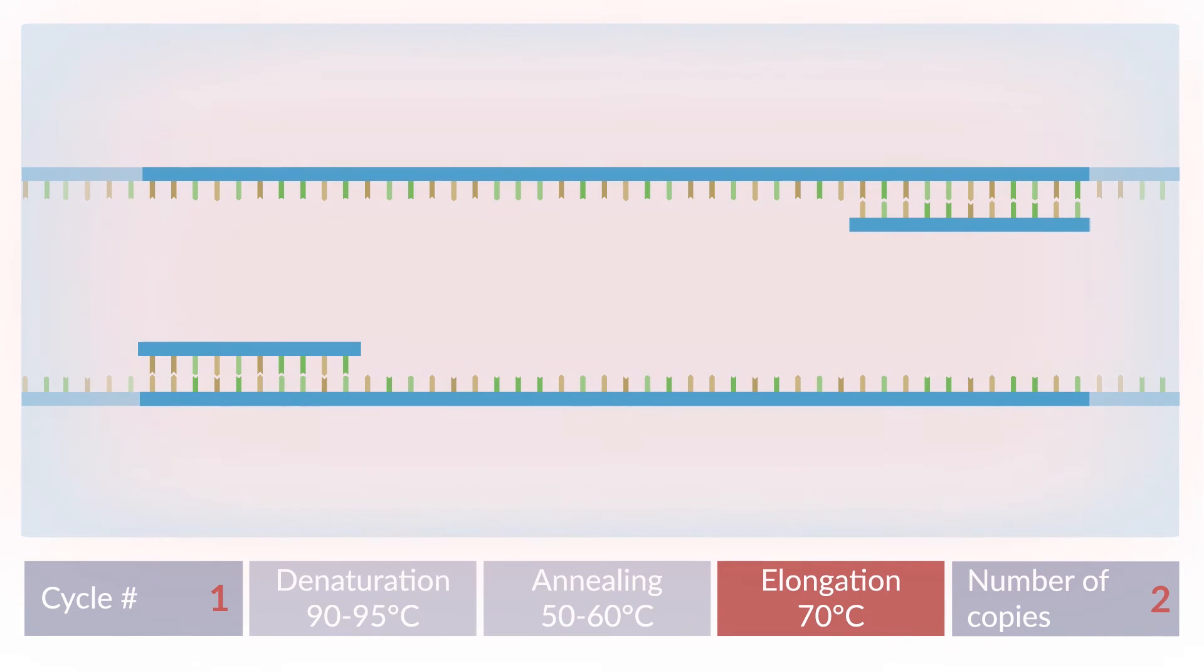During the elongation step, the temperature is increased again to around 70 degrees Celsius, the optimal temperature for DNA polymerase activity. The enzyme attaches nucleotides to the primer's 3' end, extending the strand in this direction.